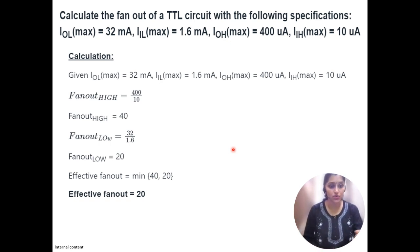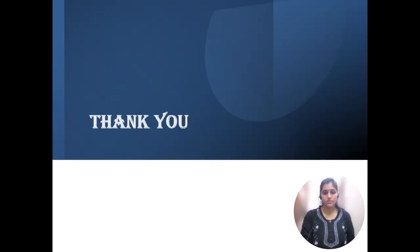After substituting given values, high level fan-out is 400 divided by 10, that is 40. And low level fan-out is 32 divided by 1.6, where the low level currents are given in milliamperes and high level currents are given in microamperes. So, low level fan-out we got as 20. Effective fan-out is 40 for high level and 20 for low level. But we consider the minimum value - how many minimum number of gates we can connect to the output of one particular gate.